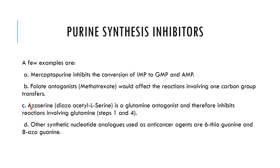The third one is azaserine, also known as diazoacetylserine. It is a glutamine antagonist and therefore inhibits the reactions involving glutamine. Other synthetic nucleotide analogues used as anti-cancer agents include 6-thioguanine and 8-azaguanine.